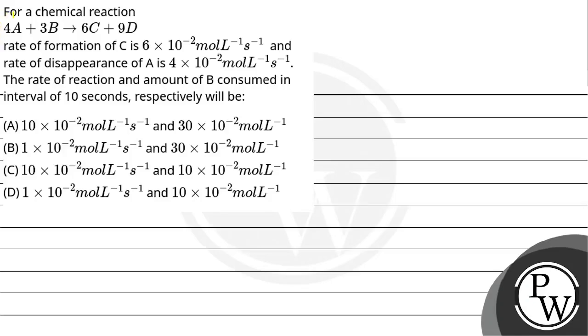Hello Bacho, let us read the question. The question says that for a chemical reaction 4A plus 3B gives 6C plus 9D. Rate of formation of C is 6 × 10^-2 mol/L/s and rate of disappearance of A is 4 × 10^-2 mol/L/s.